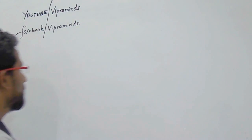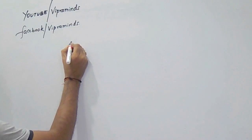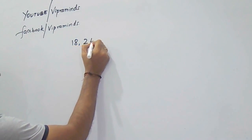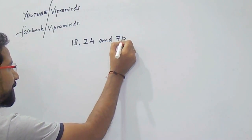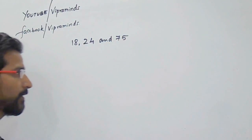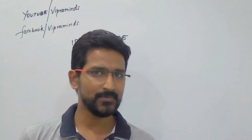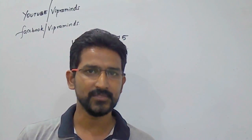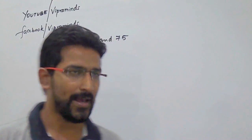We will take one example here. We want to calculate the HCF of 18, 24, and 75. What you have to do is select any 2 numbers out of these 3 and calculate the HCF of those 2 numbers using Euclid's division algorithm.